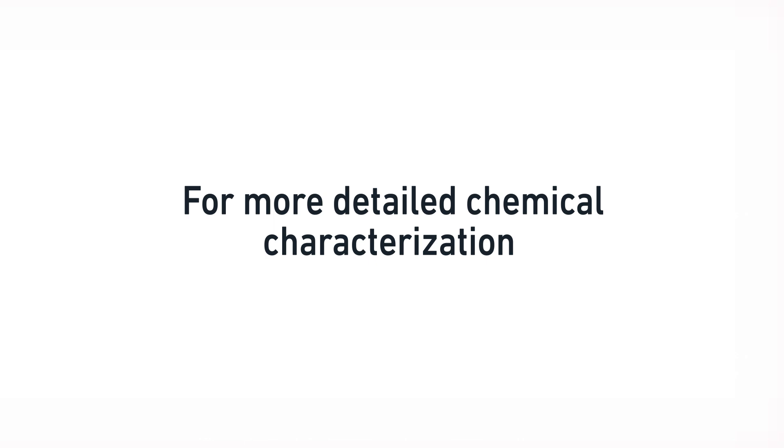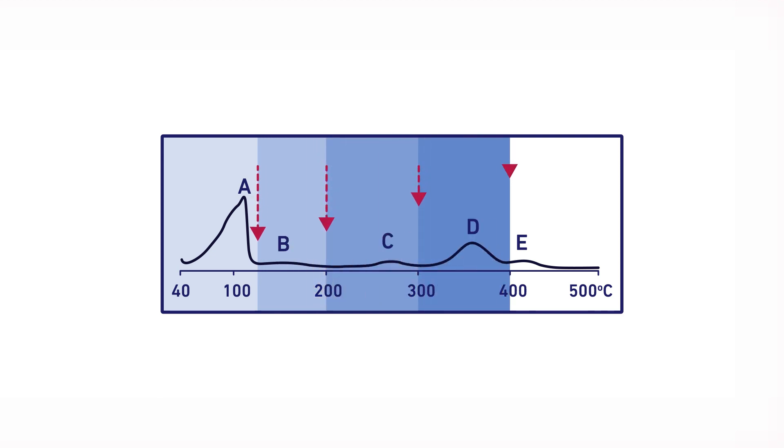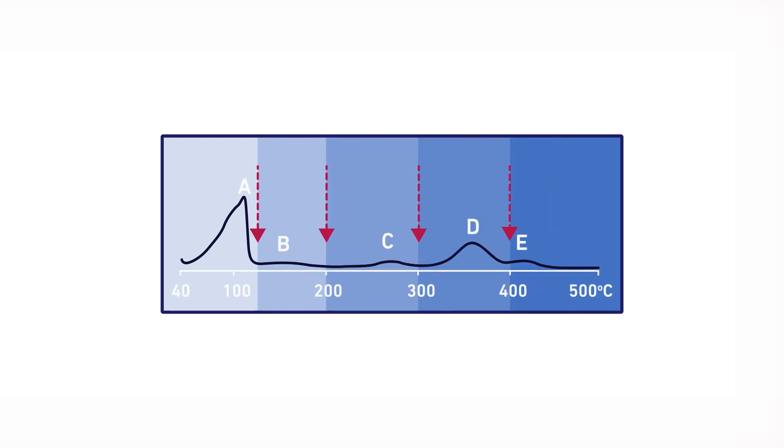For more detailed chemical characterization, you can use the heart-cutting mode of operation. Heart-cutting is the sequential thermal slicing of the EGA thermogram. Up to eight EGA thermal zones can be selectively introduced into the GC separation column using Frontier's selective sampler.